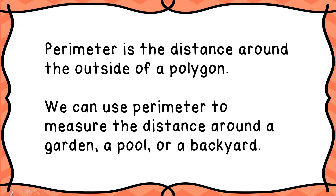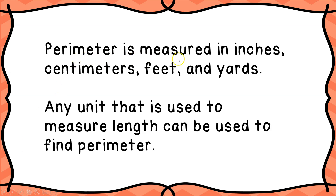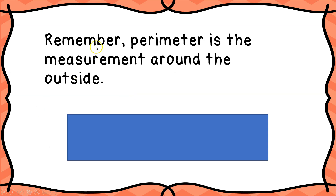Perimeter is the distance around the outside of a polygon, and we can use perimeter to measure the distance around a garden, a pool, or a backyard. In fact, if you wanted to walk around the outside of your house, that would be finding perimeter. Perimeter is measured in inches, centimeters, feet, and yards — pretty much any unit used to measure length can be used to find perimeter.